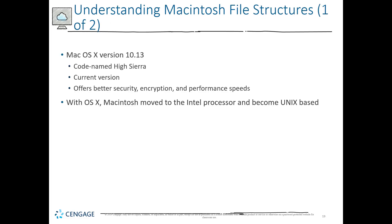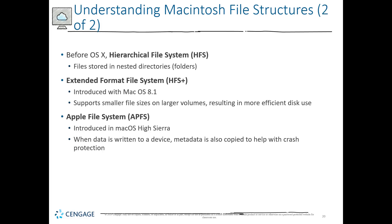Moving on, let's talk about the Mac or Apple file system. Mac OS keeps updating and as it grows it gets newer features and better performance. Mac OS moved to an Intel-based processor and became more UNIX-based. Before OS X we had the HFS file system — the Hierarchical File System. After a while we got the extended file system, HFS Plus. In anything above version 10, the modern Apple OS, we have the Apple File System or APFS.